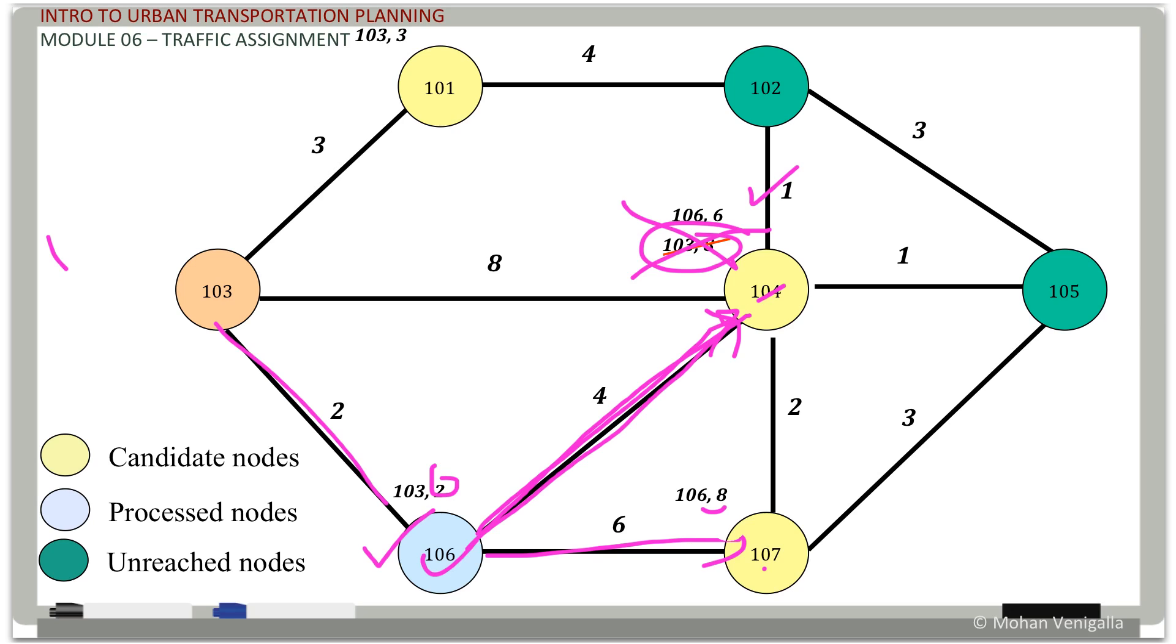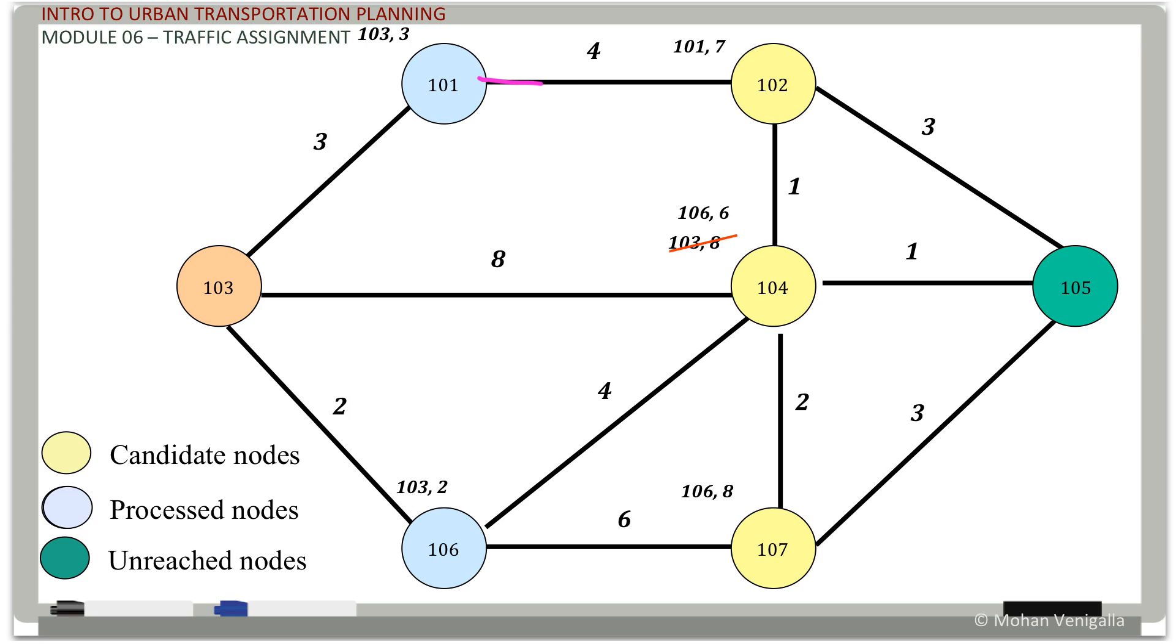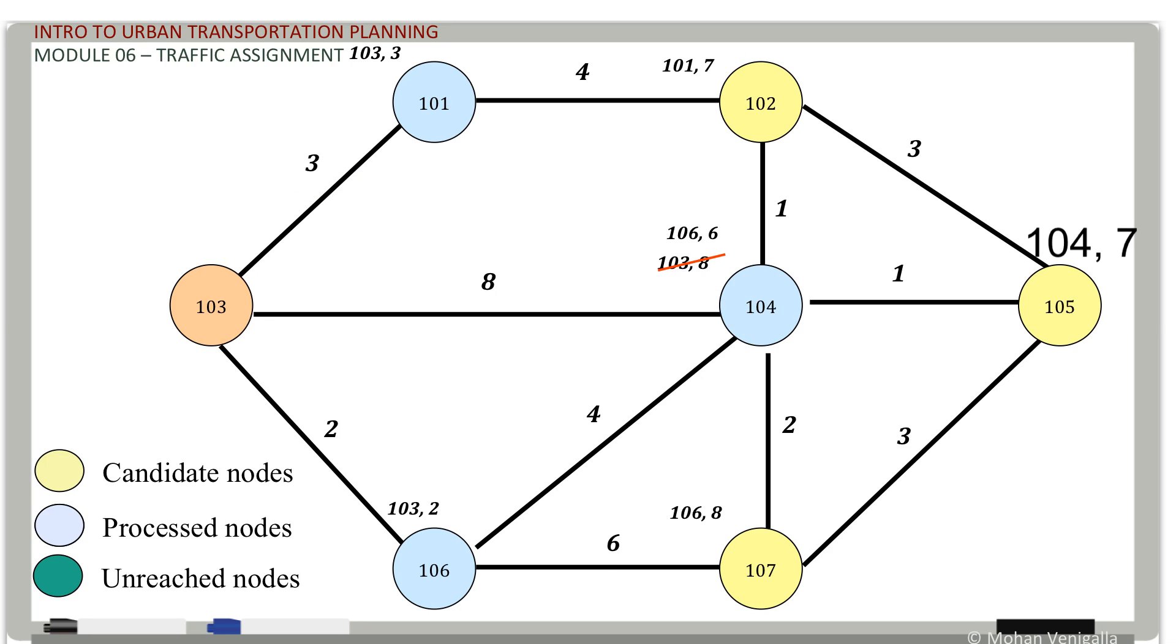So this guy is done, pop it. Now who else is there in the sequence list? You have 107, 104, and 101. Who is the closest to the root? The closest to the root this time happens to be 101, which came from 103, and travel time three. Now we process this in the next step. There's 101. So 101 to 102 took three plus four, which is seven minutes, and the back node to 102 is 101. And now 101 is done.